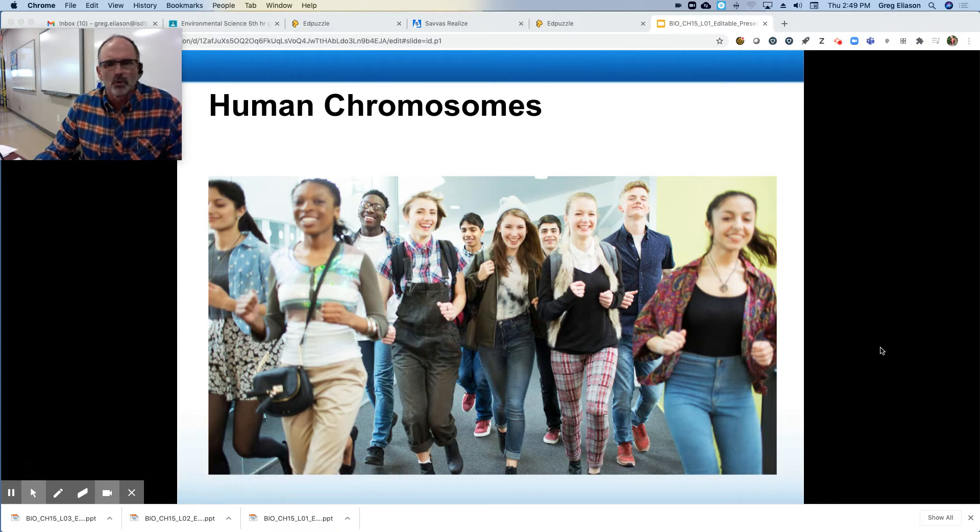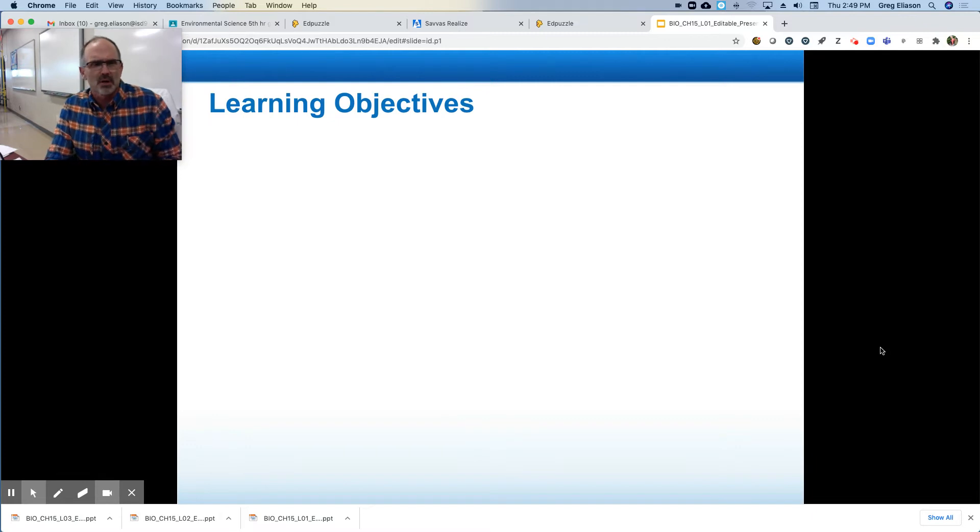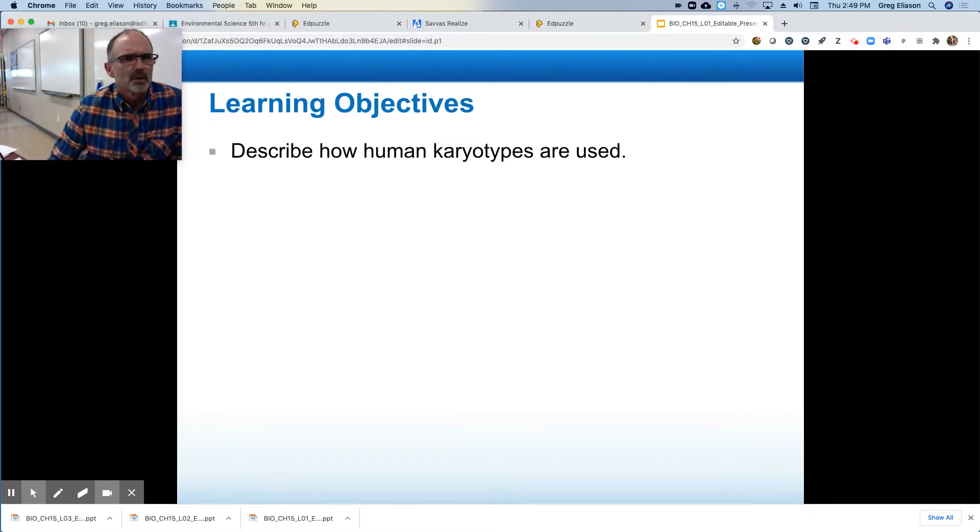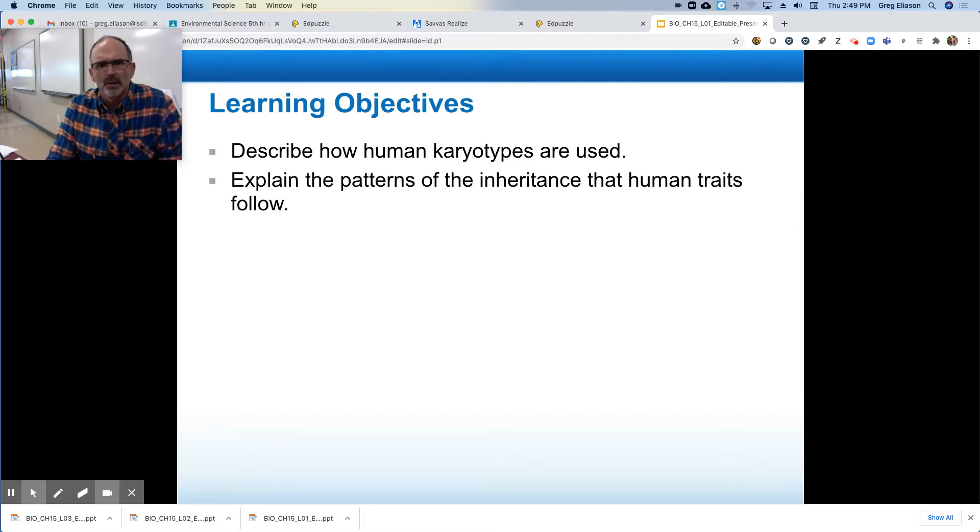All right, here we go. Human chromosomes. Our objectives for this chapter: describe how human karyotypes are used and explain the patterns of inheritance that human traits follow.